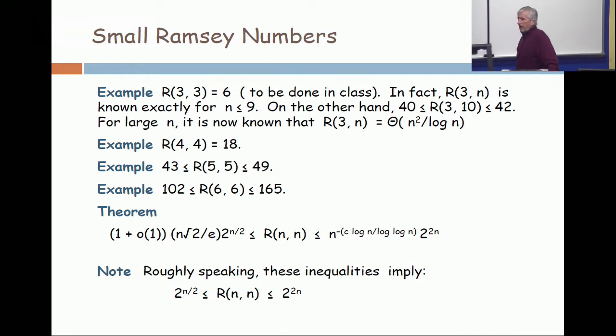R(3,10) is not known exactly, but it's known to be one of three numbers: 40, 41, or 42. Those three bounds have been known for about 10 years.